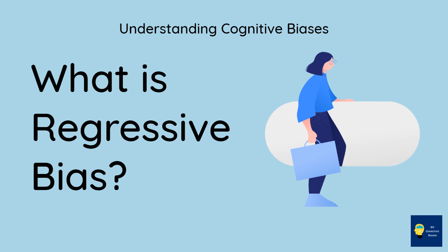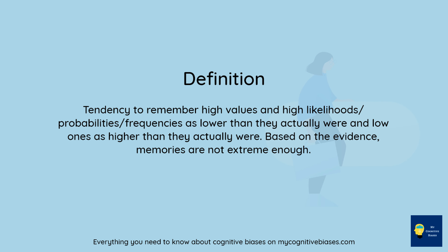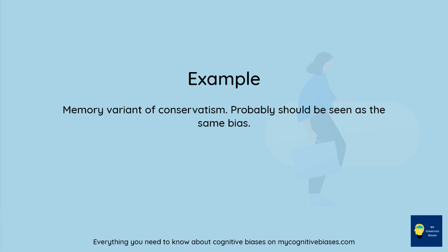What is conservatism or regressive bias? It is the tendency to remember high values and high likelihoods, probabilities, or frequencies as lower than they actually were, and low ones as higher than they actually were. Based on the evidence, memories are not extreme enough. The memory variant of conservatism — probably should be seen as the same bias.